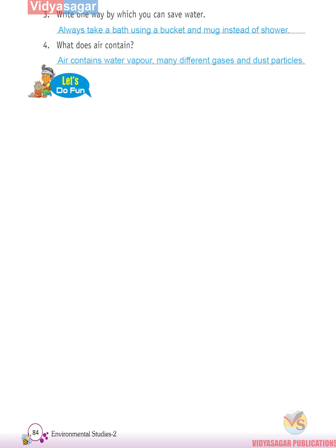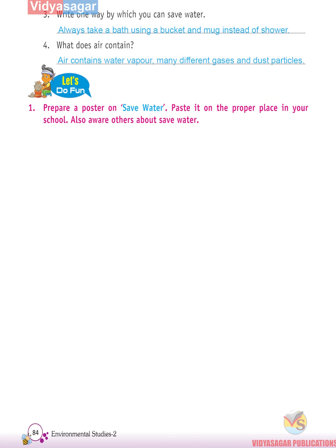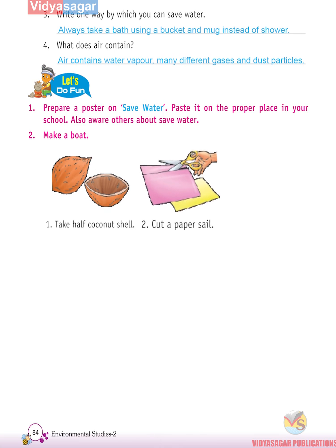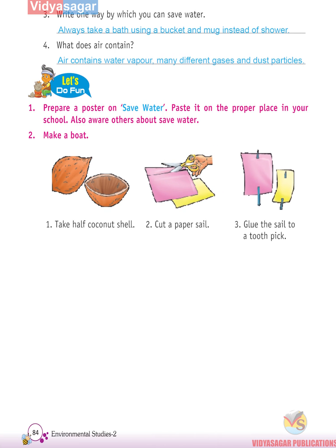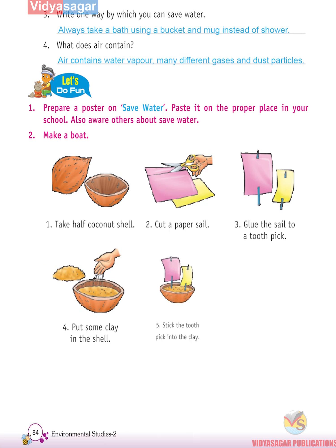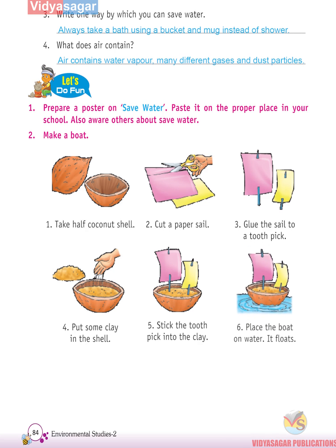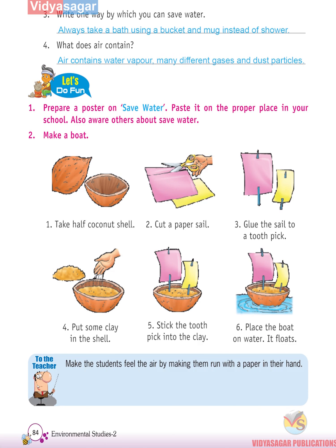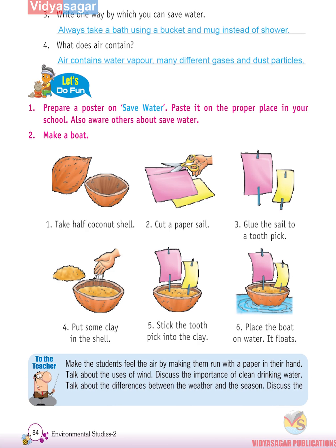Let's do fun activities: Prepare a poster on saving water and paste it in a proper place, and spread awareness about saving water. Make a boat: take half a coconut shell, cut a paper sail, glue the sail to a toothpick, put some clay in the shell, stick the toothpick into the clay, place the boat on water — it floats. Teacher's note: Make students feel air by having them run with paper in hand. Talk about uses of water, importance of clean drinking water, differences between weather and season, and what we eat and wear in different seasons.